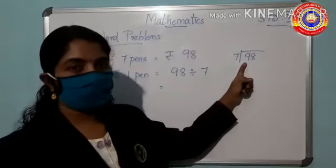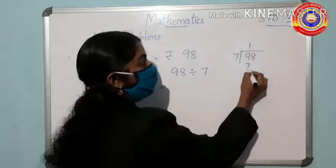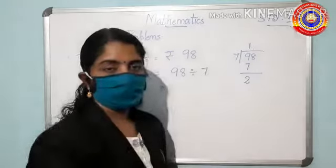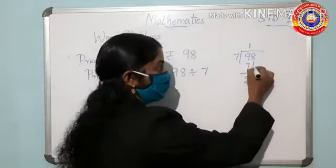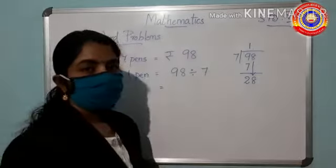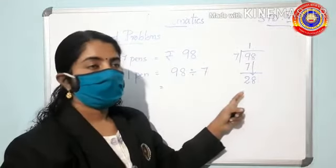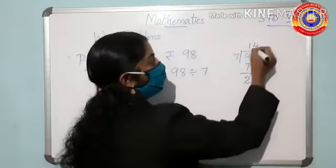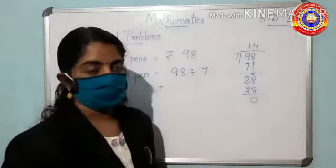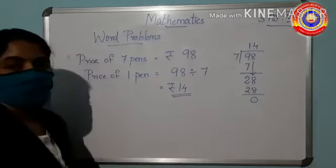Divide the numbers one by one. Can you divide 9 by 7? One time — 1 × 7 = 7, then 9 − 7 = 2. Bring the 8 down — the number becomes 28. Then 28 ÷ 7: 7 into which number gives 28? Yes, it is 4. So 7 × 4 = 28, and 28 − 28 = 0. The answer is rupees 14. The price of one pen equals rupees 14.